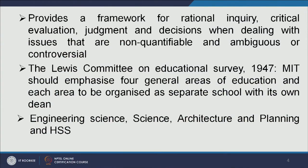The Lewis Committee on Educational Survey of 1947 stated that MIT should emphasize four general areas of education, and each area is to be organized as a separate school with its own dean. Those four areas are: engineering sciences, natural sciences, architecture and planning, and humanities and social sciences.